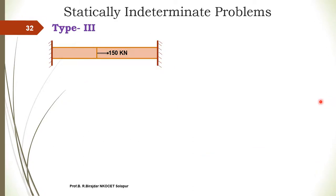Now we move to the third type, which we can also call statically indeterminate problems. When can we call a problem indeterminate? When the simple equations of statics are not sufficient to solve the problem, we call it a statically indeterminate problem. To solve it, we have to use its deformation characteristics along with the equilibrium equation.